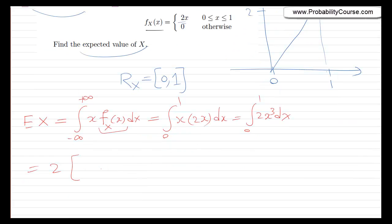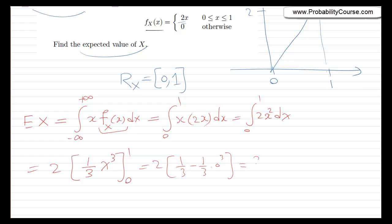So it is the integral from 0 to 1 of 2x² dx — that's x squared, not x cubed. This equals 2 times the integral from 0 to 1 of x² dx, which is 2 · [x³/3] from 0 to 1. Putting in 1, we obtain 1/3, minus putting in 0 gives 0, so the expected value equals 2/3.